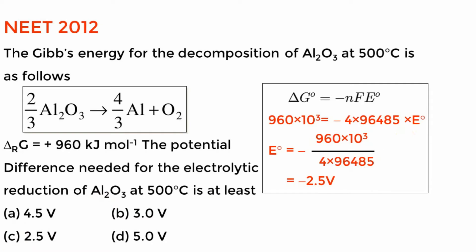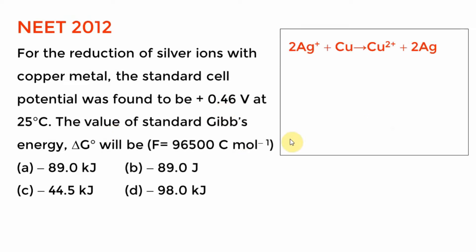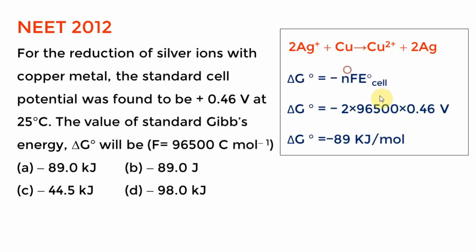The reduction of silver ions with copper metal — the standard cell potential was found. They are giving you E° cell directly. What is the value of Gibbs free energy? Write down the equation; you can see right away it is a 2-electron process. N = 2, F is given, E° is given — it is a multiplication. You can approximate if needed.